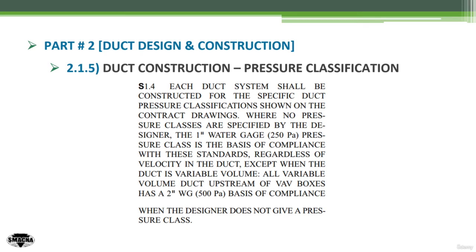Starting with the first step in the duct construction process, which is to determine the duct pressure classification. Quoting from SMACNA: each duct system shall be constructed for the specific duct pressure classification shown on the contract drawings. Where no pressure classifications are specified by the designer, the one-inch water gauge or 250 Pascal pressure classification is the basic compliance with these standards, regardless of the velocity in the duct.